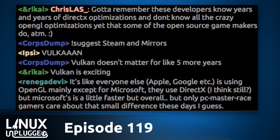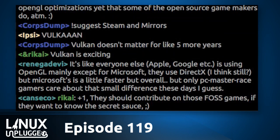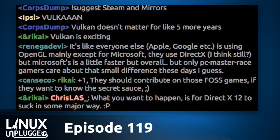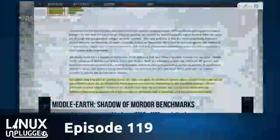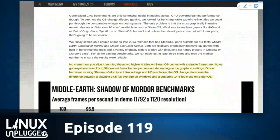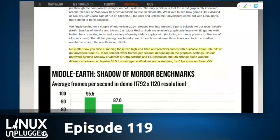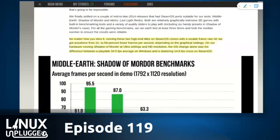Mumble Room, any thoughts on Steam Machines, Vulkan, or gaming under Linux? Looking at these Ars Technica numbers — any number over 60 frames per second is literally imperceptible to the human eye. Any number over 30, you're going to have a hard time perceiving. For most of these numbers in the article, Linux still performs over 30 frames per second, so for most people you're not going to have a perception problem.